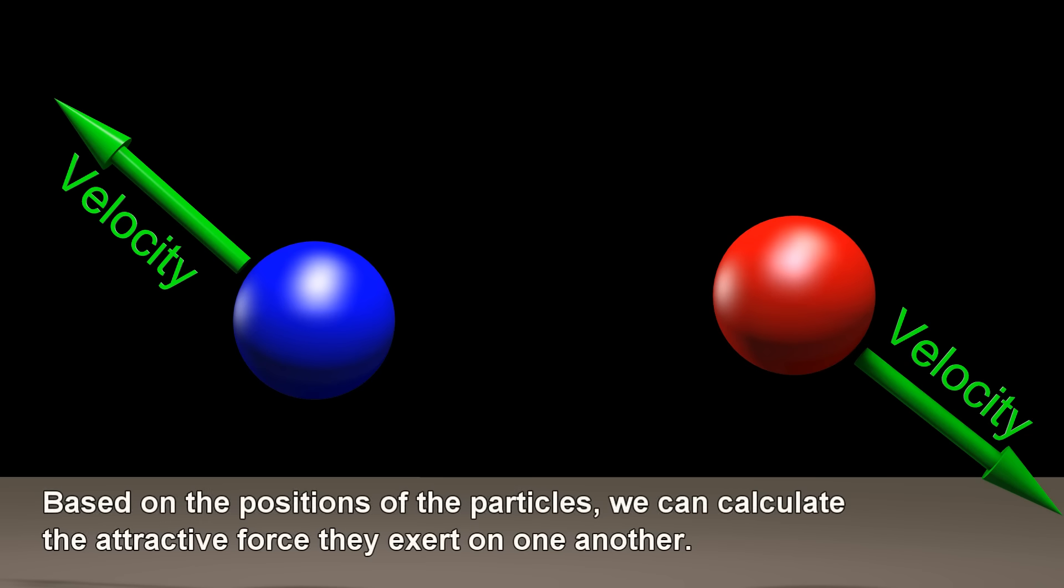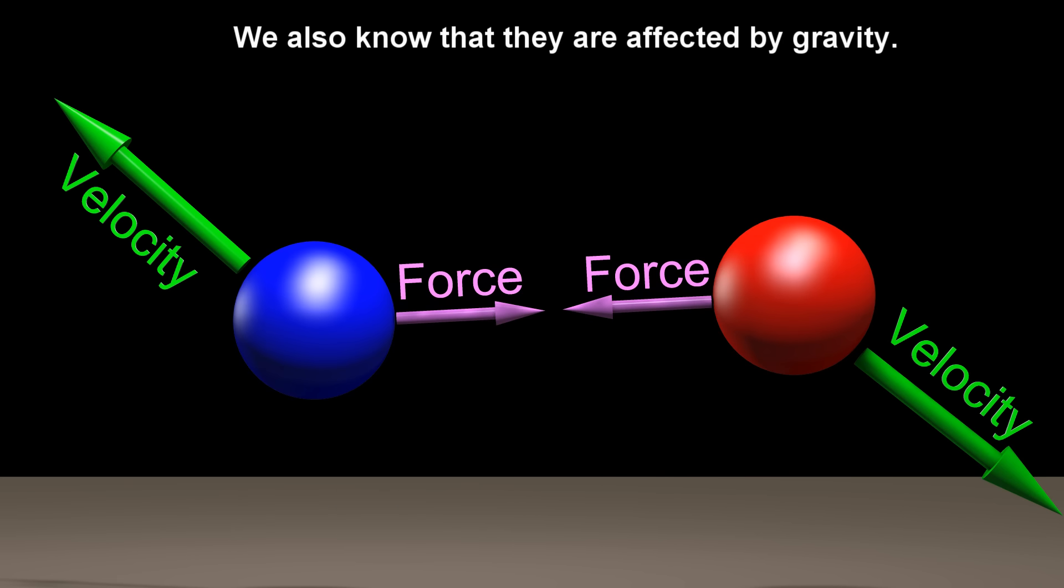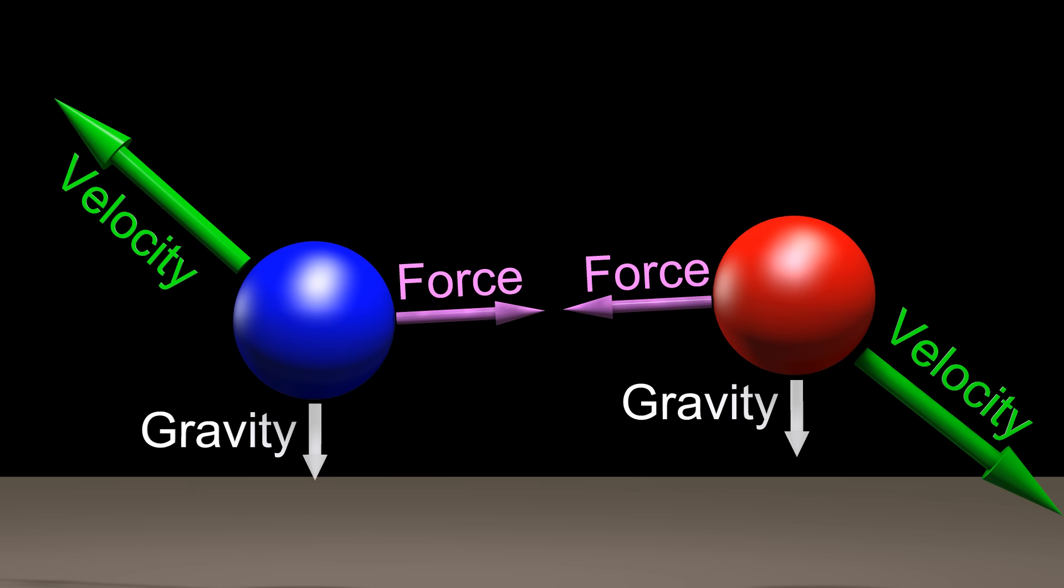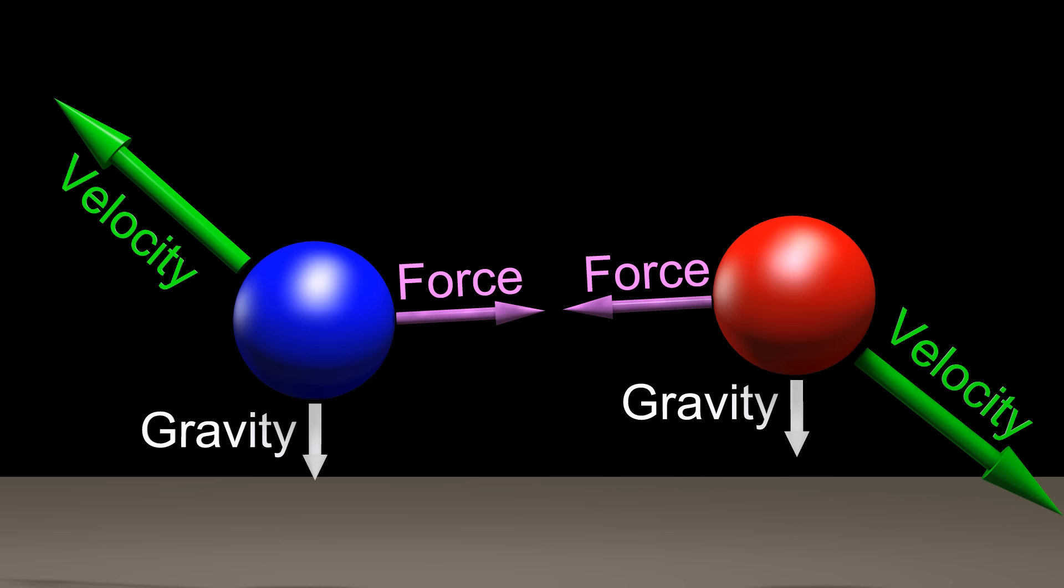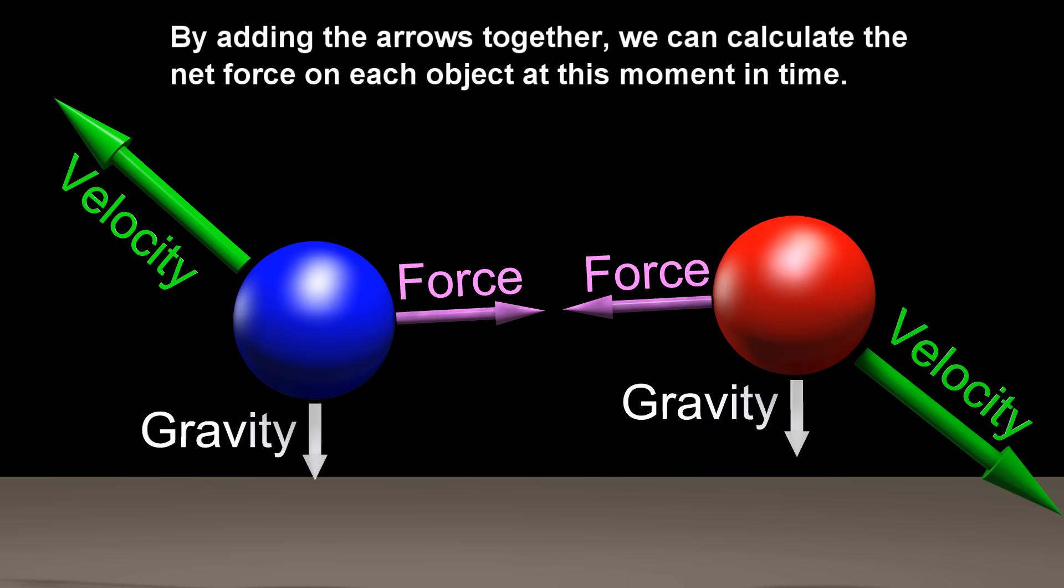Based on the positions of the particles, we can calculate the attractive force they exert on one another. We also know that they are affected by gravity. If we think of gravity as a force, then all the forces can be represented with arrows as shown. By adding the arrows together, we can calculate the net force on each object at this moment in time.